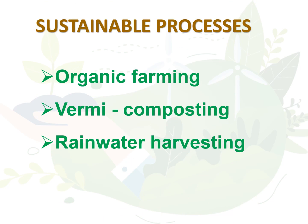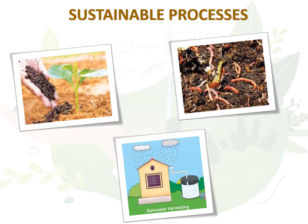Let us see the sustainable development processes now. Some practices such as organic farming, vermicomposting and rainwater harvesting are being used to help preserve the environment. Organic farming is where farmers do not use chemical pesticides and fertilizers to increase their production. They use organic and natural fertilizers such as cow dung to help in growing crops. This helps in better quality, chemical-free crops while at the same time maintaining the soil quality for future use. This is a true example of sustainable development where we are not only using the earth's resources but are also preserving it for future generations.